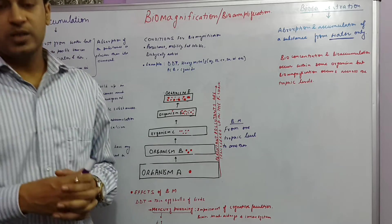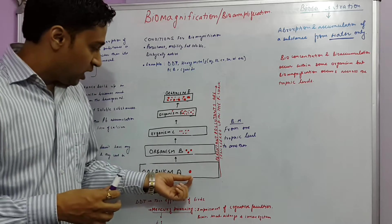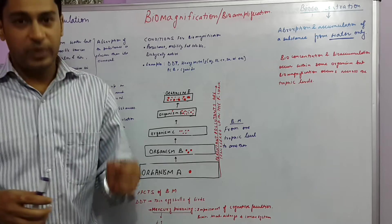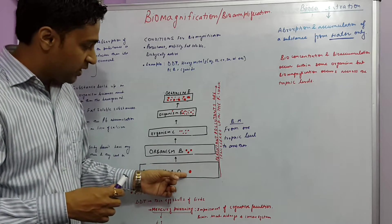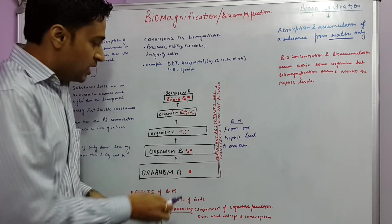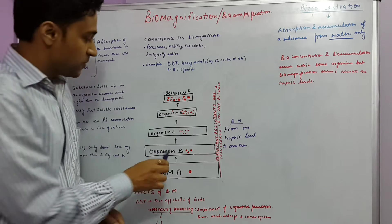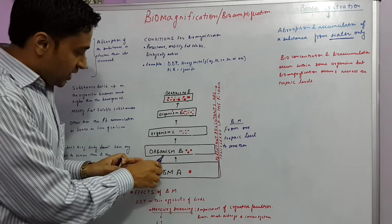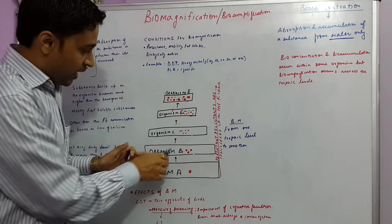Now see, biomagnification is a process where let's say there is some organism A. The organism A had some concentration of some persistent pollutant. And now this organism A was eaten by organism B.